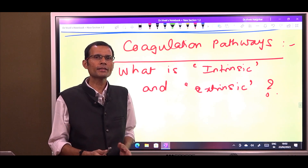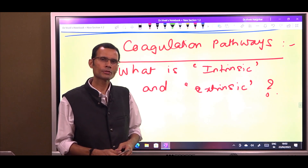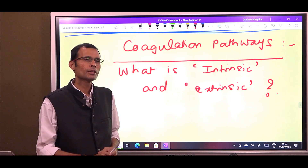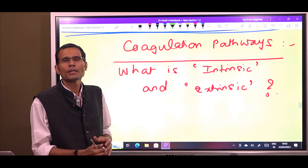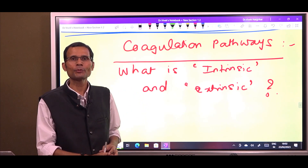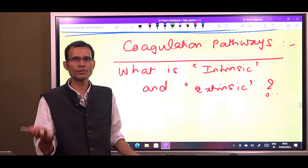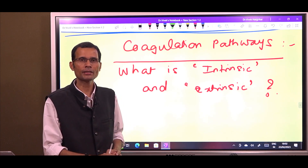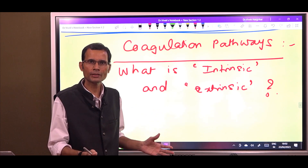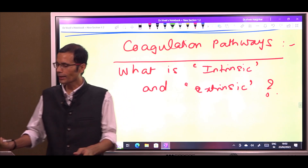I always get this one particular doubt — a very commonly asked question. In the coagulation pathways, what are these intrinsic and extrinsic mechanisms? What do they mean? Let us try to understand this.